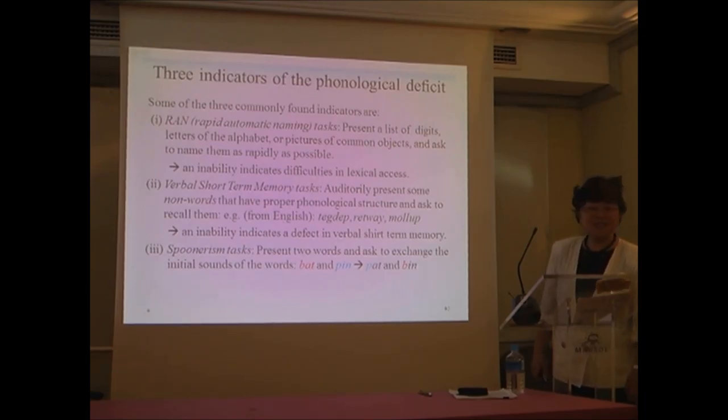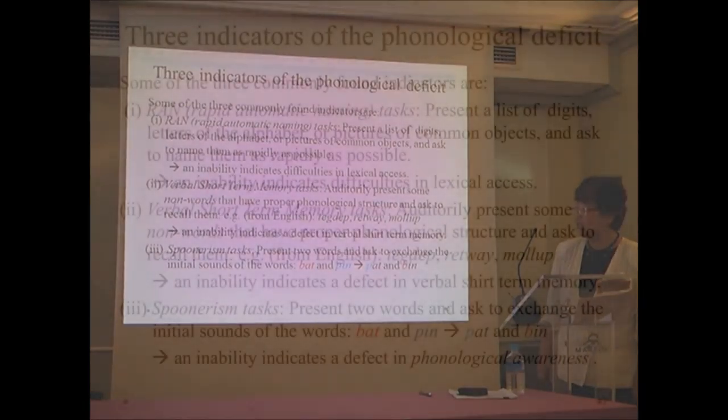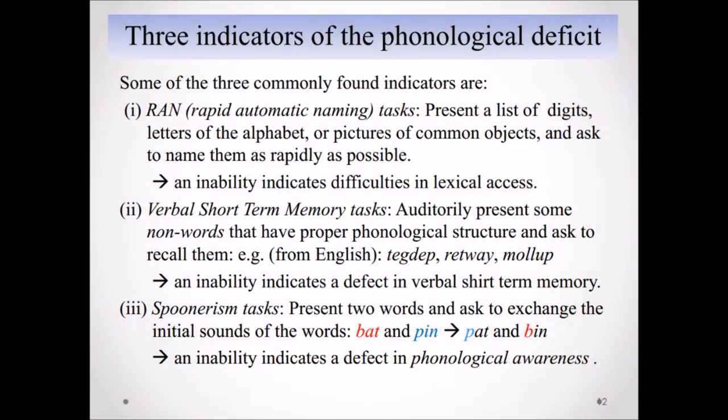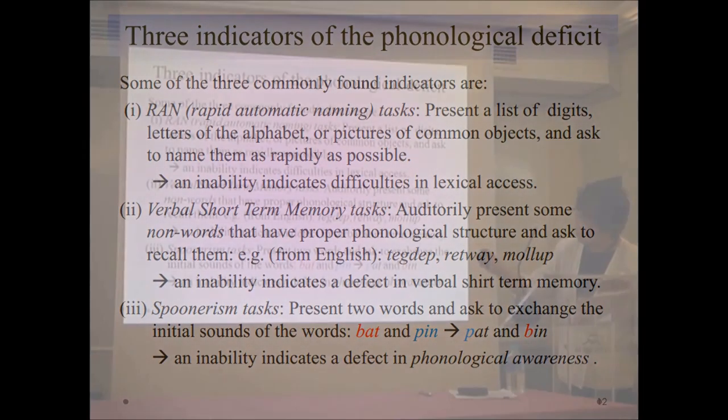Thirdly, Spoonerism tasks. We present two words in a printed form and ask to exchange the initial sounds of the words. So, for example, 'bat and pin,' the initial sounds, which is B and P, have to be exchanged. So the end result would be 'pat and bin.' If children cannot do it, it indicates a defect in phonological awareness. Now, this has been in conventional studies.